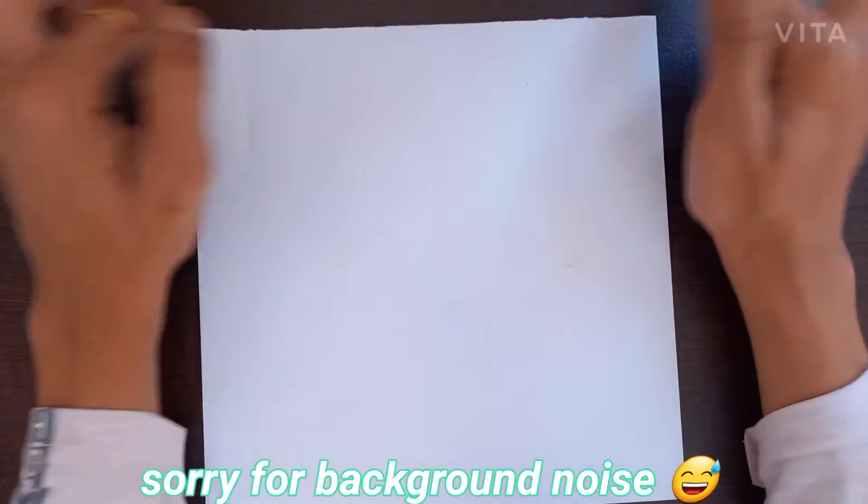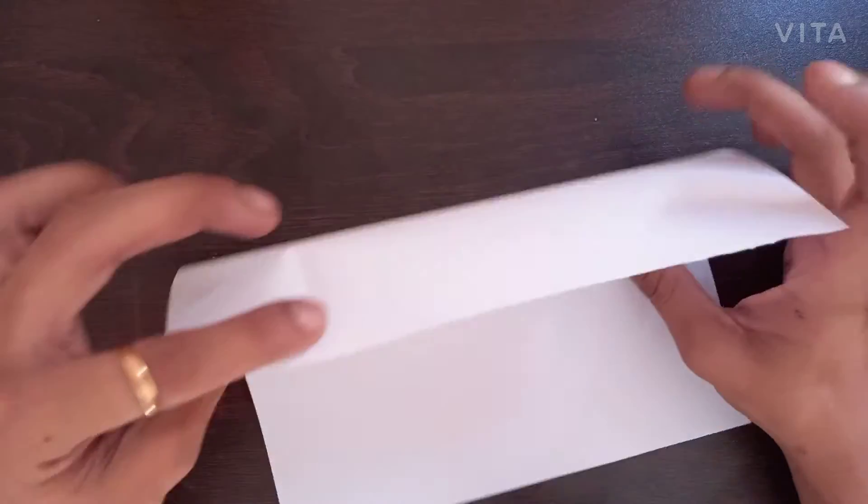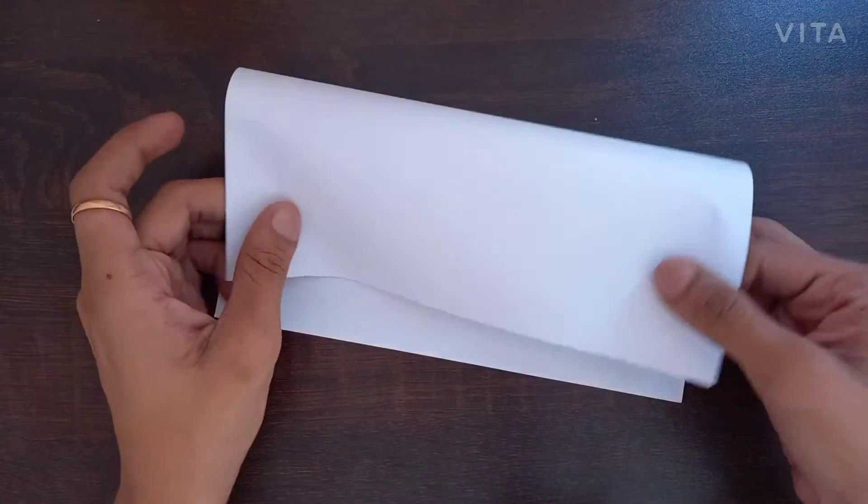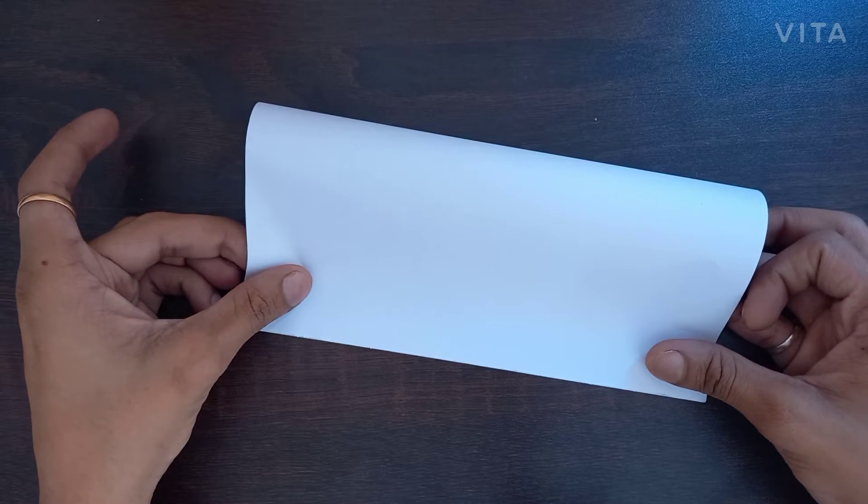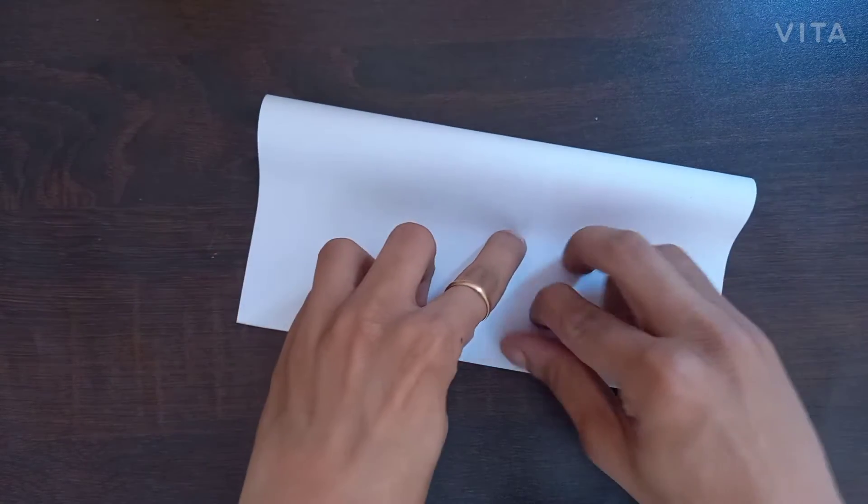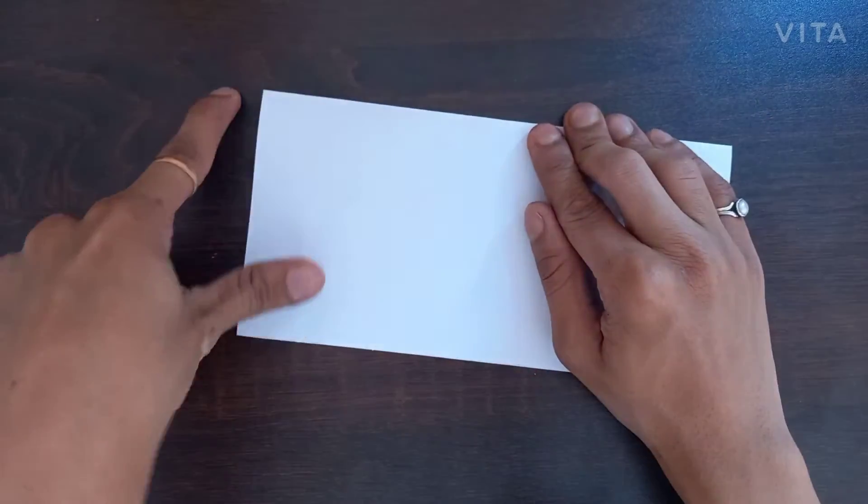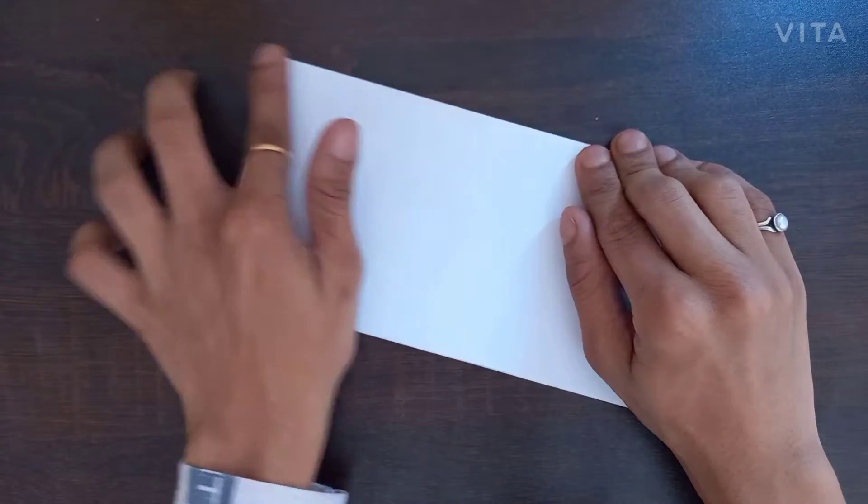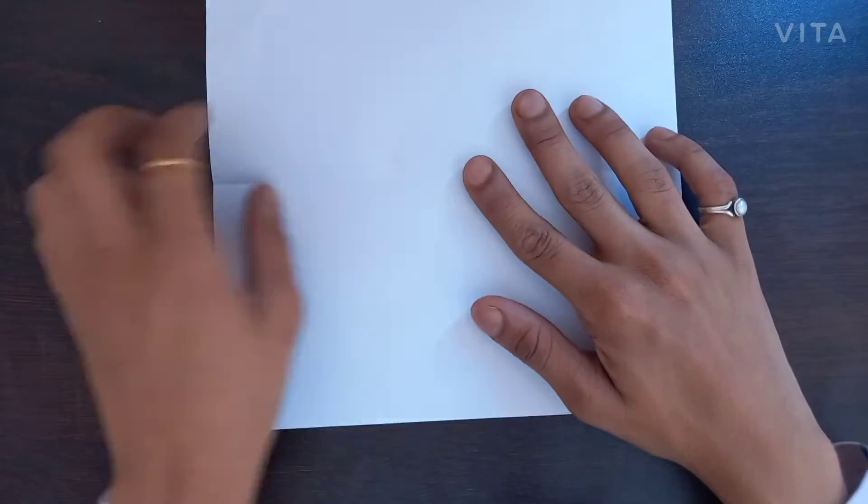You will need a square paper and fold it in half, just like this. Squeeze it with your nails so that you can get a visible crease. Open the paper.